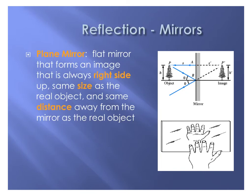In today's lab we looked at different types of mirrors. A plain mirror is a flat mirror that forms an image that is always right side up, always the same size as the real object, and always the same distance from the mirror as the real object. So the image you see appears to be as far behind the mirror as you are in front of it.